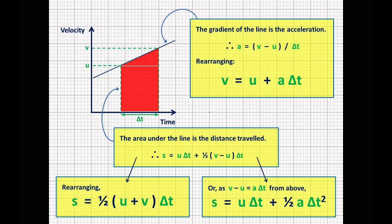Now, if you rearrange that equation, you get one half times (u plus v) times delta t. And then, if you remember that v minus u is equal to a times t from above, thus s equals ut plus one half at squared.